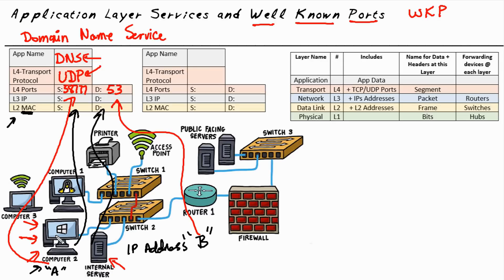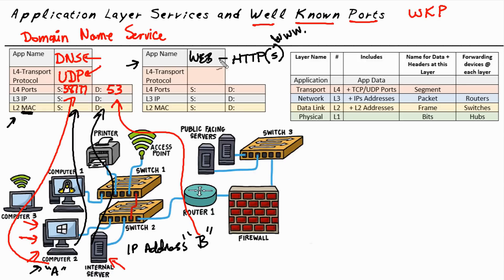Once Bob's computer has the IP address for Google.com, Bob can then choose to connect to Google.com or whatever website he's trying to reach. If Bob is using a browser and wants to go to a web page at Google.com, he would be using web services. In the world of IP networking at the application layer, a major protocol for web services is called HTTP — Hypertext Transfer Protocol — and it is what's used commonly for access to web pages. If we're going to www.anything, there's a good chance our computer is going to be using HTTP, or for security, maybe HTTPS, as the application layer service. For web services using HTTP, the transport layer protocol that's built in to support HTTP is TCP, Transmission Control Protocol.